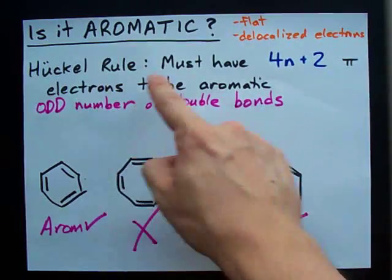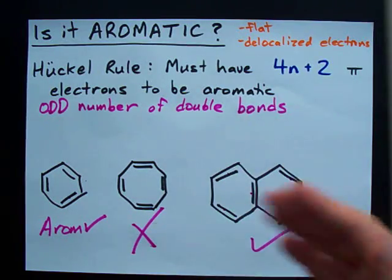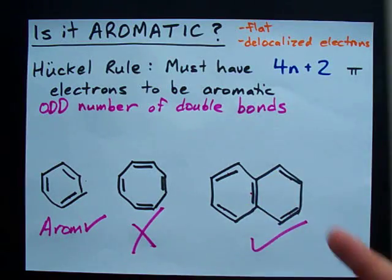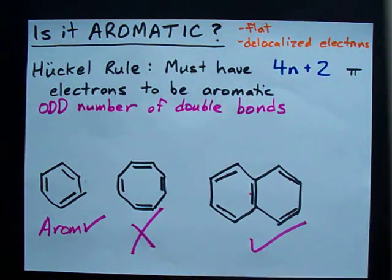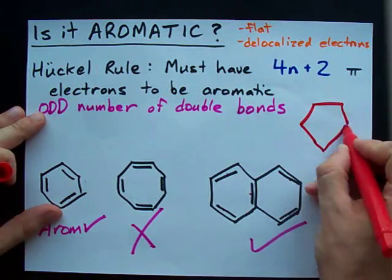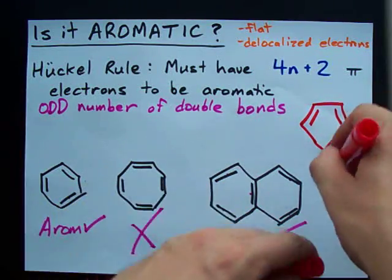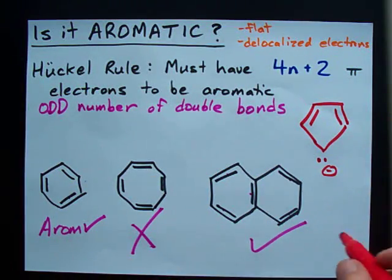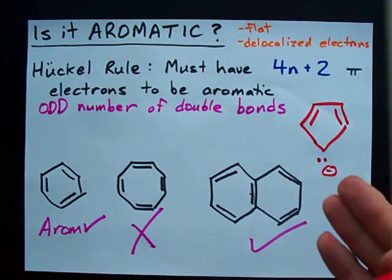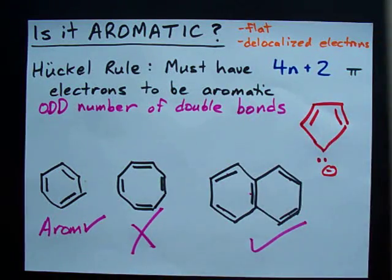The Hückel rule talks about how many electrons you can find in double bonds. Chemist Nate says just count the number of double bonds, and if it's odd, it's aromatic — as long as they're in a ring. I should point out the reason the Hückel rule exists is that there are ions that don't have alternating double bonds; they have extra free lone pairs of electrons floating around in pi orbitals. But long story short, in the questions you're going to get in grade 11, 12, or whatever grade you're in, these are going to be the most common ones. Count the number of double bonds — if it's odd, aromatic. Done.